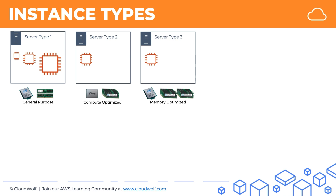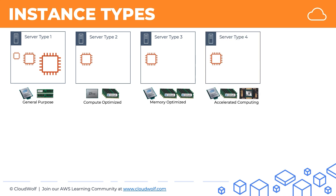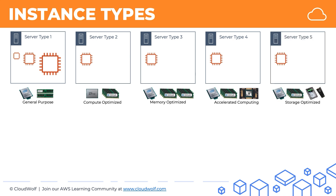For different tasks you might need an instance that is memory optimized, which has more memory than another server type. Another instance type is for accelerated computing, where in addition to the general purpose setup you also have a GPU installed for graphics rendering or machine learning tasks. The final instance type is called storage optimized, where in addition to the general purpose setup you also have an HDD or SSD built in.